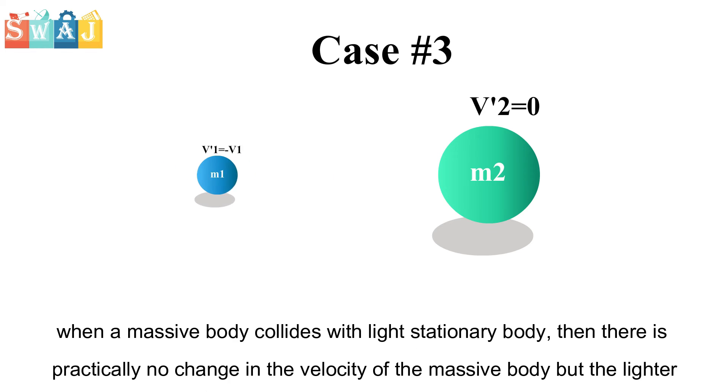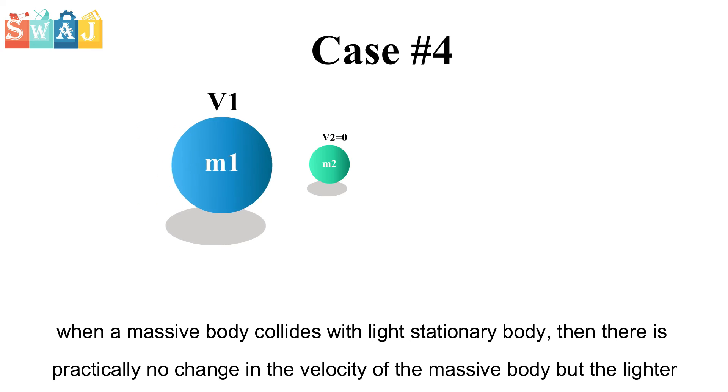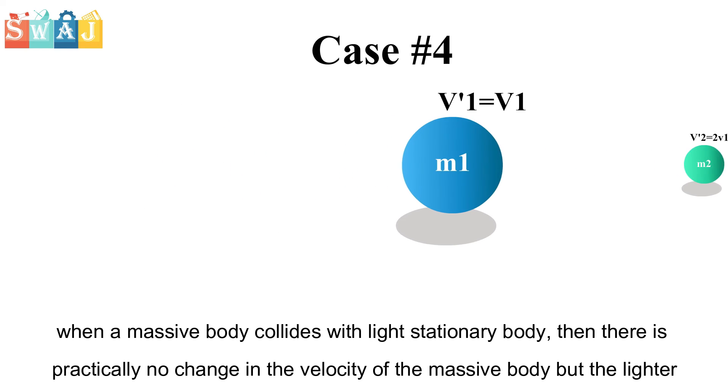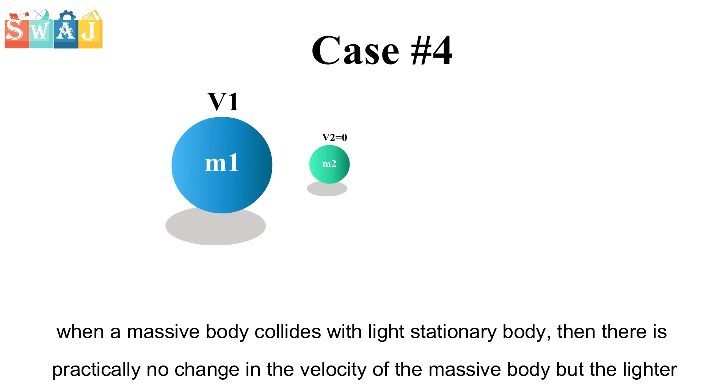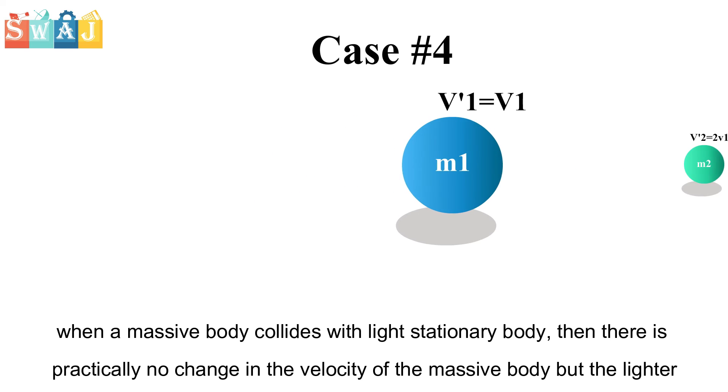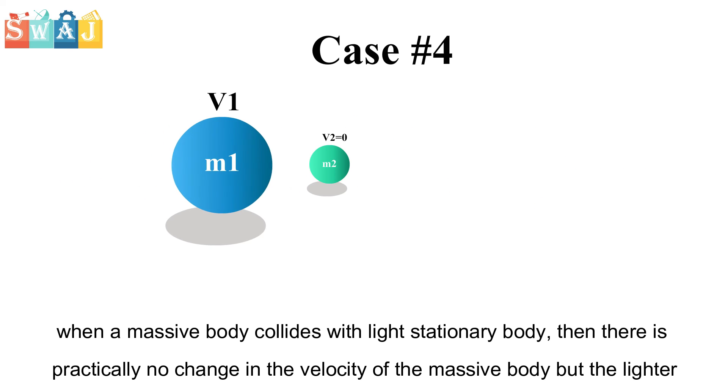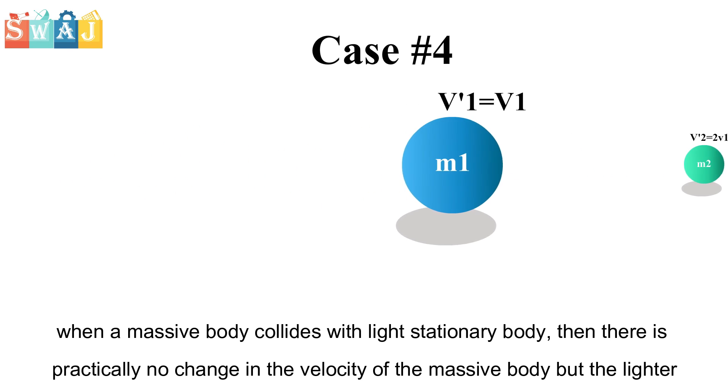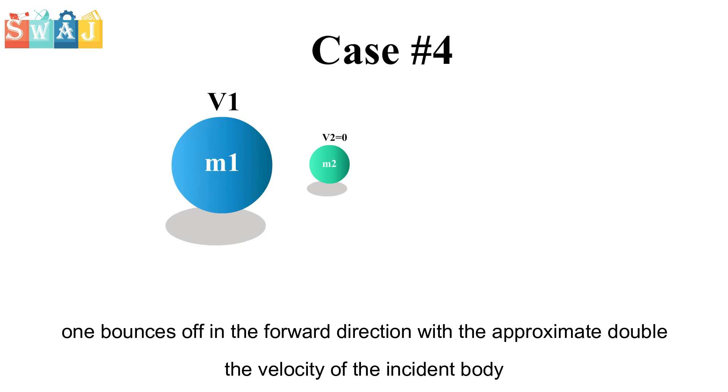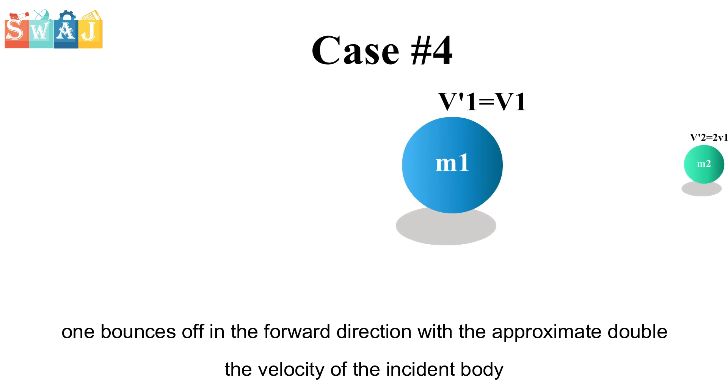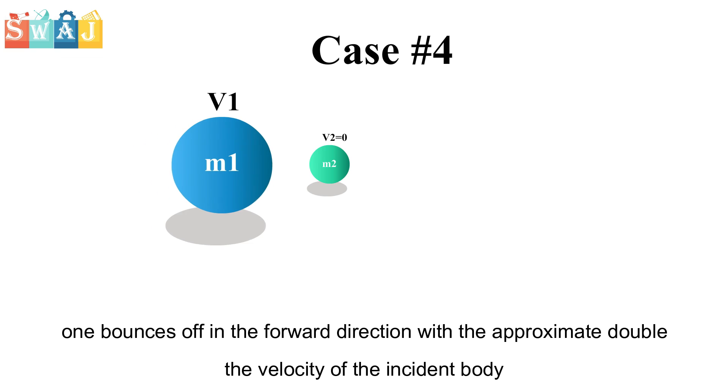Case 4: When a massive body collides with a light stationary body, then there is practically no change in the velocity of the massive body, but the lighter one bounces off in the forward direction with approximately double the velocity of the incident body.